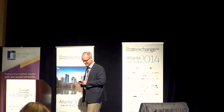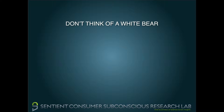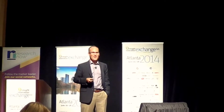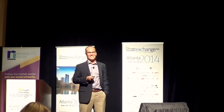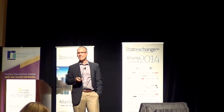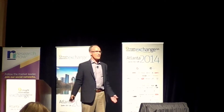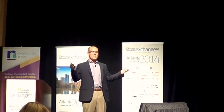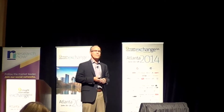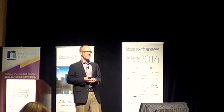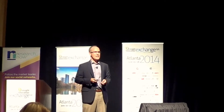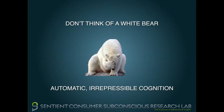So what is implicit association testing? Don't think of a white bear — no really, don't think of a white bear. Obviously, when somebody tells you not to think of a white bear, you can't help it — you can't not think of a white bear. This is an old trick from social psychologists to illustrate the idea of automatic, irrepressible cognition. We call this a prime.